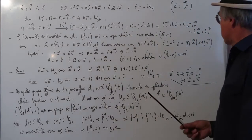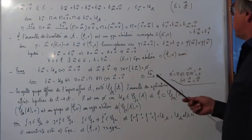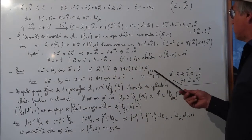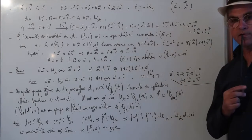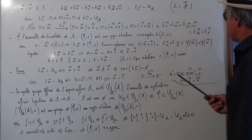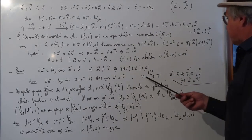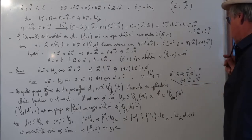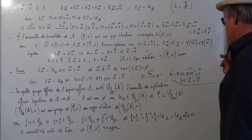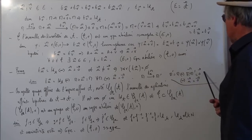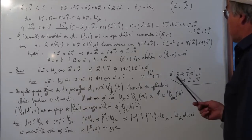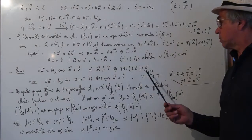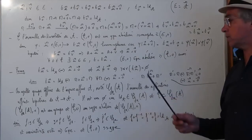Si U est différent de 0 et que M a pour image M' par T_U, pour que M' soit égal à M, il faudrait que vecteur MM' soit nul. Mais vecteur MM' = vecteur U, donc c'est vecteur nul. Cela équivaut à U = 0, ce qui est faux. Donc si U est différent de 0, il n'y a pas de point invariant, et l'ensemble des points invariants de la translation est vide.